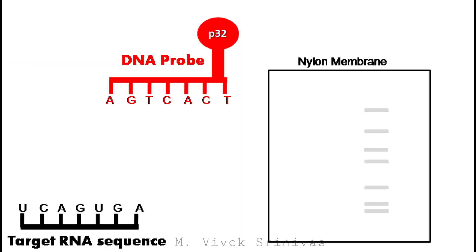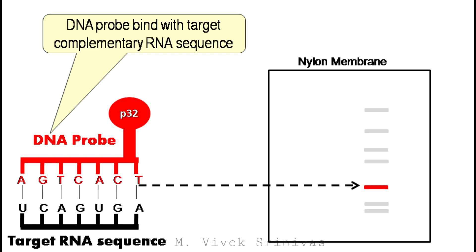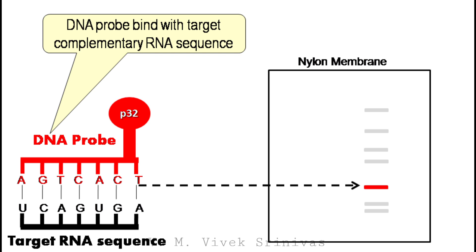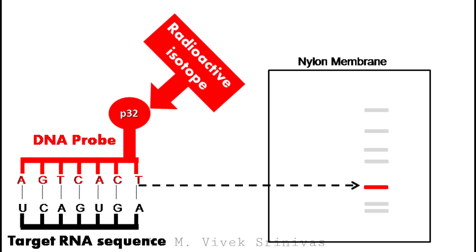The last step: the target RNA over the nylon membrane is identified by using a DNA probe with a specific sequence. This process is called DNA probe hybridization. The DNA probes are labeled with radioactive isotopes to visualize the presence of the target RNA on x-ray film by autoradiography.